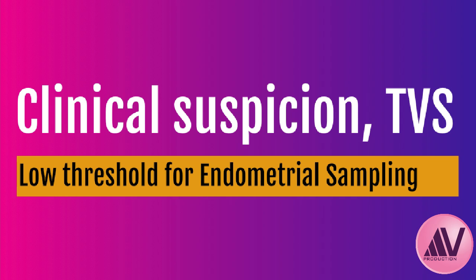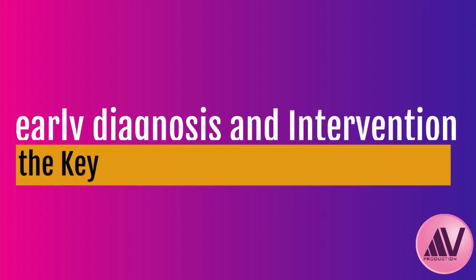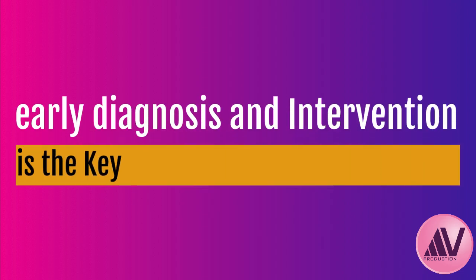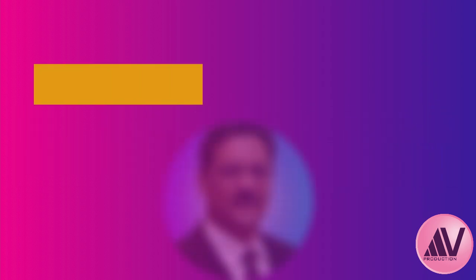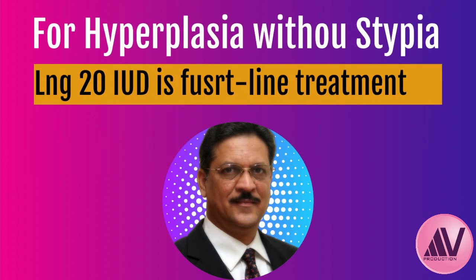To wrap up: clinical suspicion, ultrasound, and a low threshold for sampling are vital for diagnosis. Getting the diagnosis early and starting the right intervention is key to preventing endometrial cancer. For hyperplasia without atypia, the LNG-IUD is now considered the go-to first-line treatment, and treatment really hinges on whether atypia is present or not.